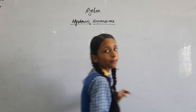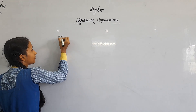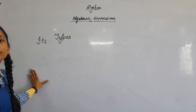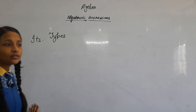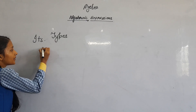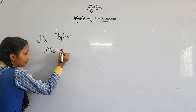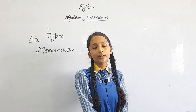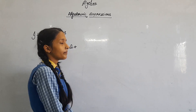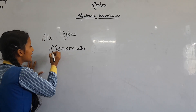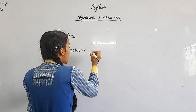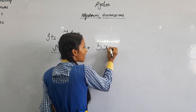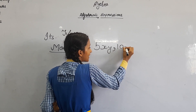Then we will come to our next topic: types of algebraic expression. There are 5 types of algebraic expression. First, we discuss the first type: monomial. The algebraic expression which contains only one term is known as monomial. Mono means 1, so the expression which contains only one term is known as monomial. For example, 5xy, etc.